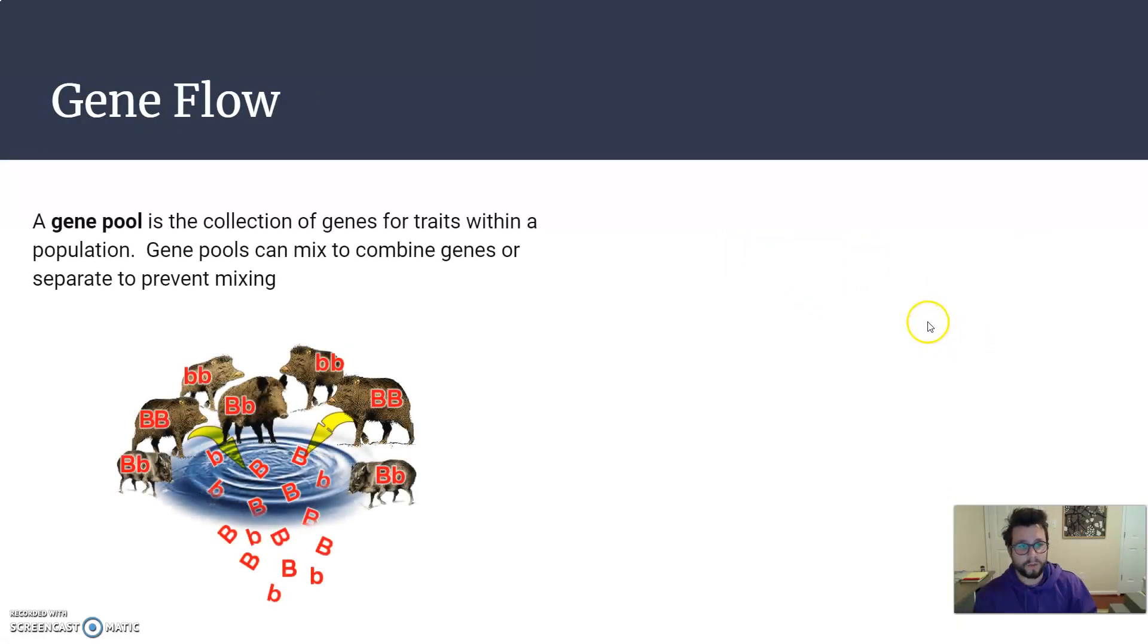Gene flow. So to understand gene flow first, a gene pool is a collection of genes for traits within a population. So we've got a bunch of letters here. If you remember, those letters are alleles. They represent a gene, they represent traits. So within this population, if they're all interbreeding, all of those alleles together would be the gene pool.